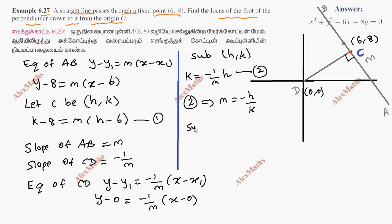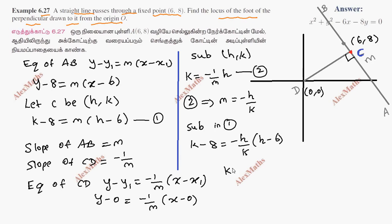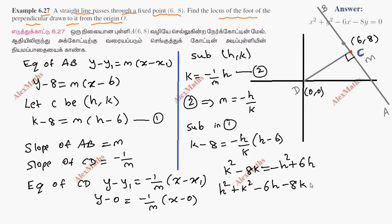Substituting M equals minus H over K into the first equation: K minus 8 equals minus H over K times (H minus 6). Expanding: K squared minus 8K equals minus H squared plus 6H. Rearranging gives H squared plus K squared minus 6H minus 8K equals 0.